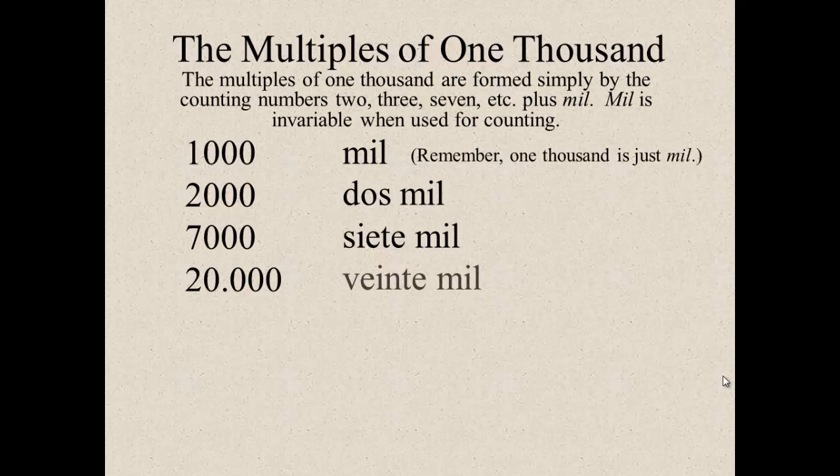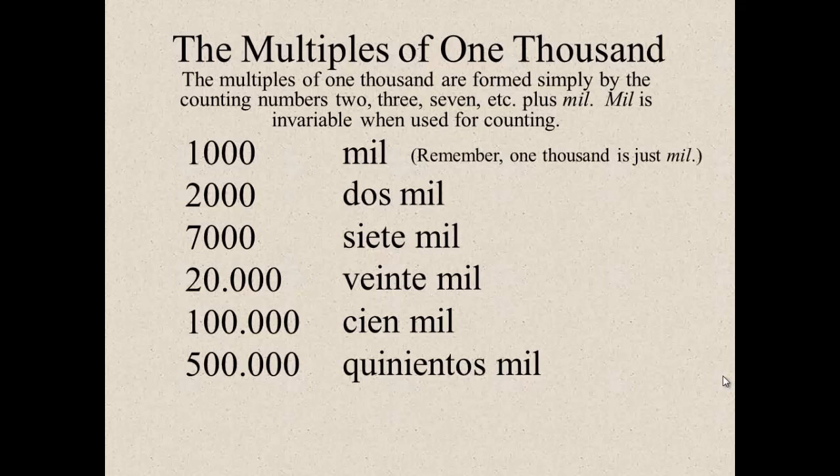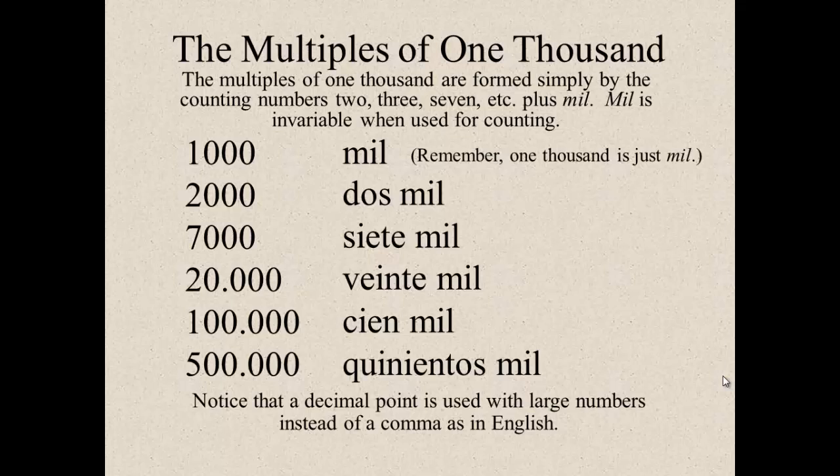Twenty thousand. Veinte mil. One hundred thousand. Cien mil. Five hundred thousand. Quinientos mil. Notice that there is a decimal point with the larger numbers instead of a comma. So, where we put a comma after the three zeros, we put a comma. They put a period.